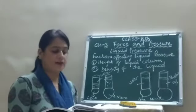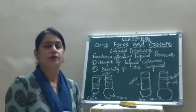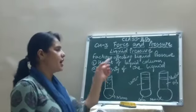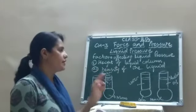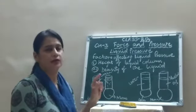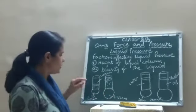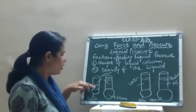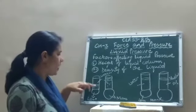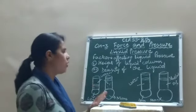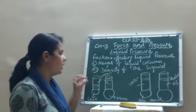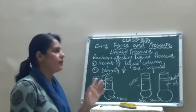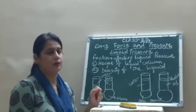Now let's look at the factors affecting liquid pressure. The pressure at a point in a liquid depends on two factors: the height of the liquid column and the density of the liquid. The height of the liquid filled in any container is called the liquid column.